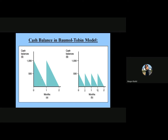At the start of the second month, he again receives $1,000 and spends the same amount at a constant rate. At the end of the second month he again has zero balance. This is the case when he is spending the amount at a uniform rate. Now look at Case B.